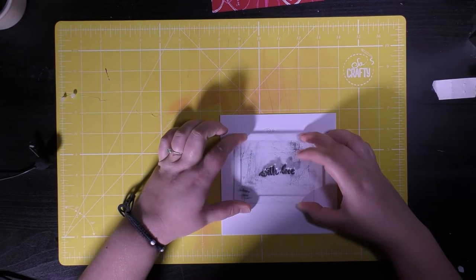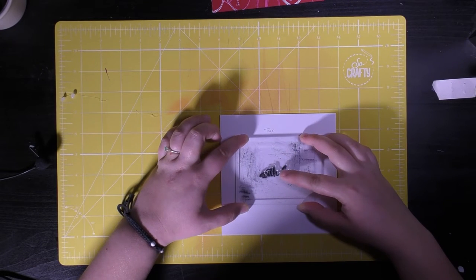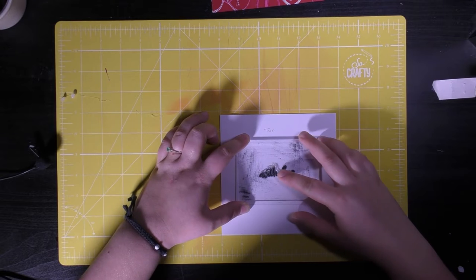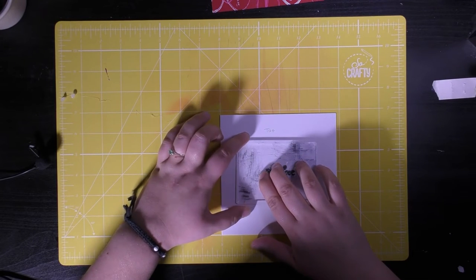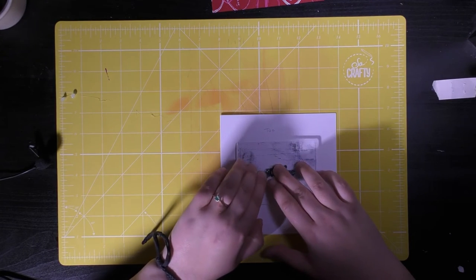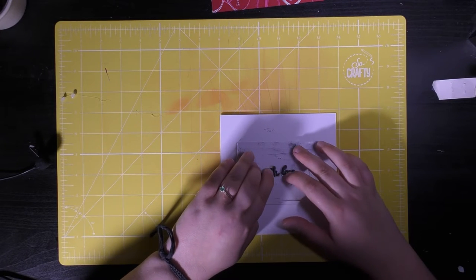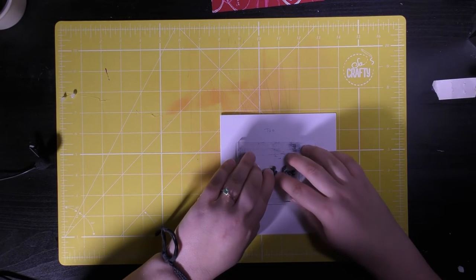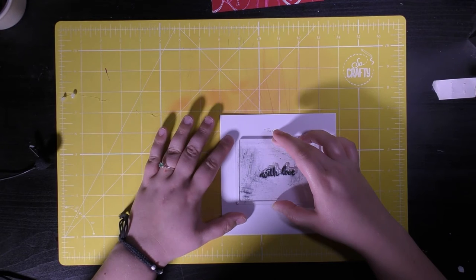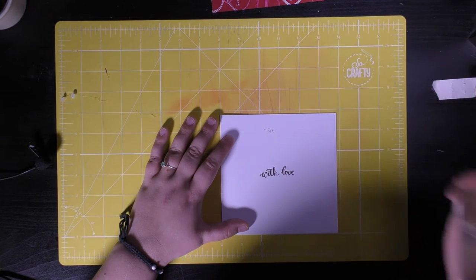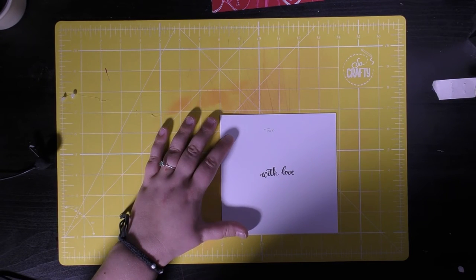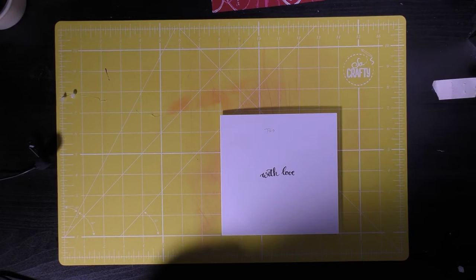Once you're happy with the position you want your sentiment in, just gently press the stamp down onto the surface of the card. Put some gentle pressure evenly over the stamp surface. If you're not that confident with stamping, you can always use a stamping press. I'll leave this to one side and we can return to our red piece of paper.